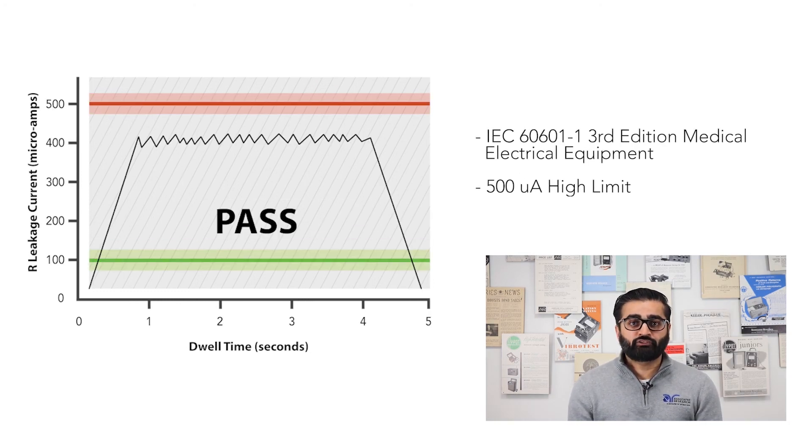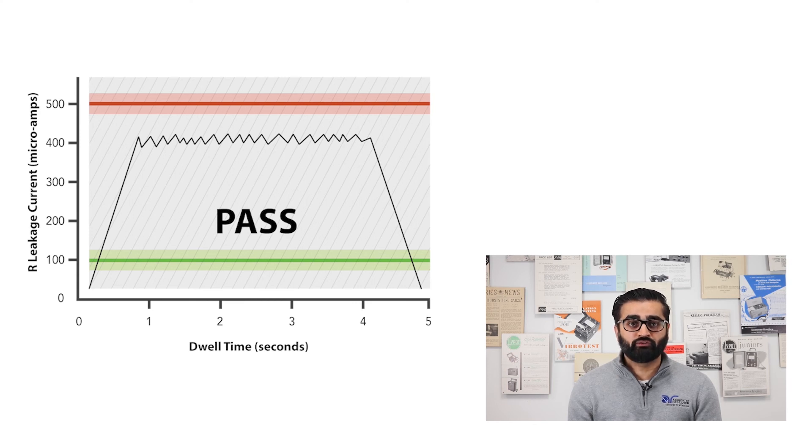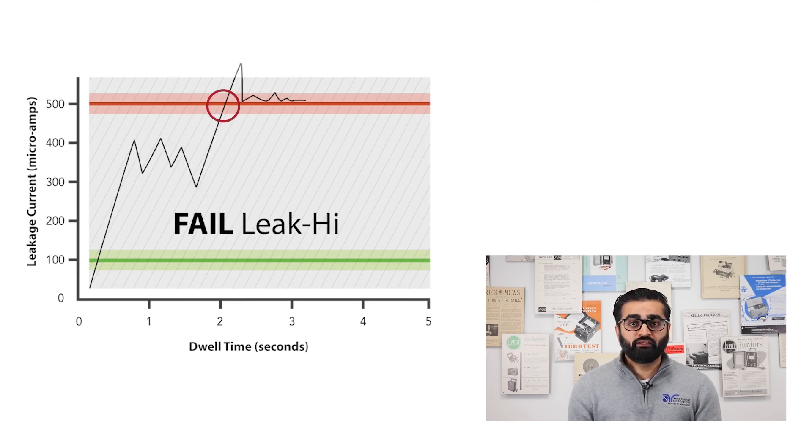For leakage current testing, the standard 60601-1 requires a certain leakage current value to be below 500 microamps. Again, this gives us the high limit value which should not be exceeded in order to be considered a pass according to the standard. If the leakage current is exceeded during tests, the equipment will indicate a high limit failure.